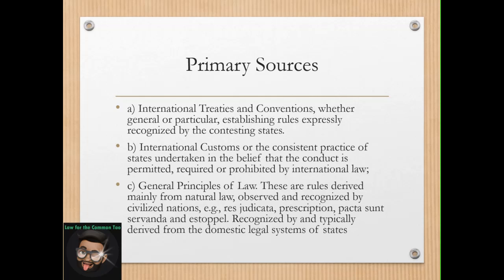The third primary source is the general principles of law. These are rules derived mainly from natural law, observed and recognized by civilized nations, such as Res Judicata, Prescription, Pacta Sunt Servanda, and Estoppel — recognized by and typically derived from domestic legal systems of states. So those are the primary sources of international law.